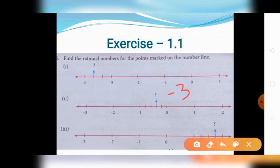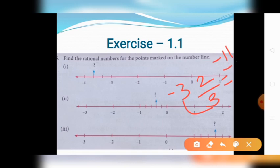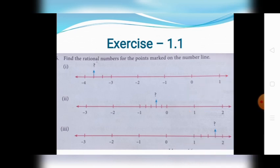The number represented in the second line, then 2 divided by 3 equal parts. Minus 3 into 2 by 3 equals: 3 times 3 is 9, 9 plus 2 is 11. Therefore the rational number is minus 11 by 3. Now the second question.